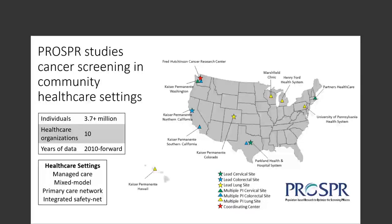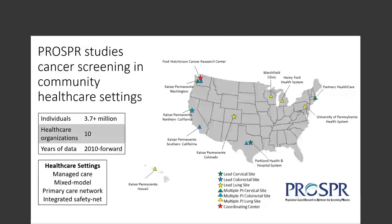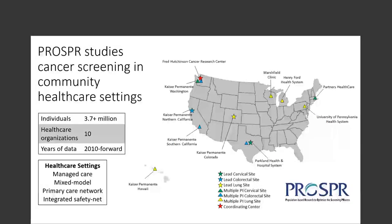Jasmine and I are leaders in the PROSPER consortium — population-based research to optimize the screening process — which aims to better understand and improve the cancer screening process in community healthcare settings. Last year NCI funded 10 different healthcare organizations and one coordinating center to study cervical, colorectal, and lung cancer screening processes. These 10 organizations are incredibly diverse. In PROSPER we have managed care organizations like Kaiser Permanente, mixed model systems such as Kaiser Permanente Washington, primary care networks, and an integrated safety net healthcare system that serves uninsured and underinsured individuals.